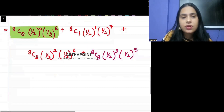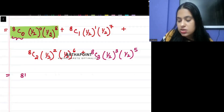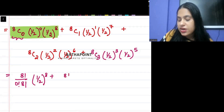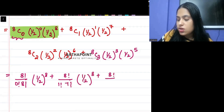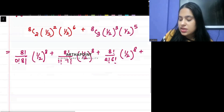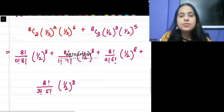So this will be: 8C0 = 8!/( 0! × 8!) × (1/2)^8, plus 8!/(1! × 7!) × (1/2)^8, plus 8!/(2! × 6!) × (1/2)^8, plus 8!/(3! × 5!) × (1/2)^8.